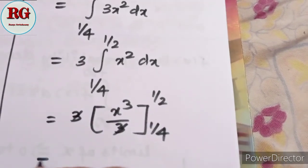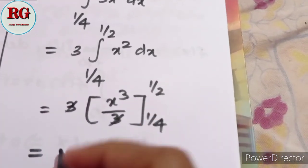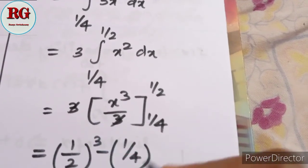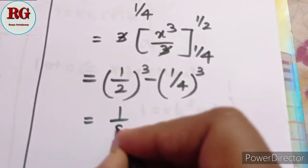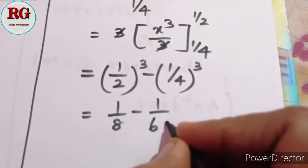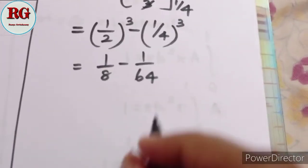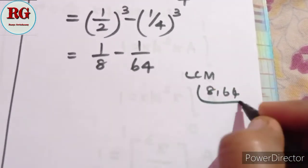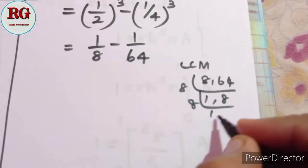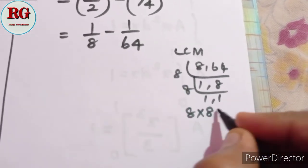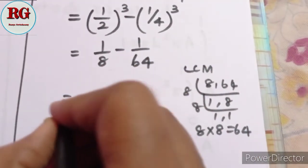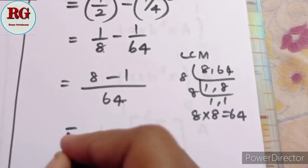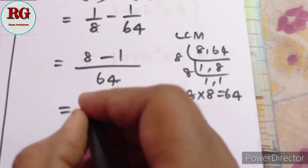We compute 1/8 minus 1/64. Taking 64 as common: 64 divided by 8 gives 8, so we get 8 minus 1 over 64. The answer is 7 by 64.